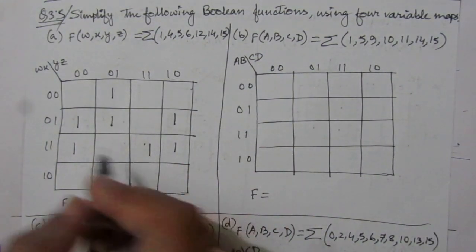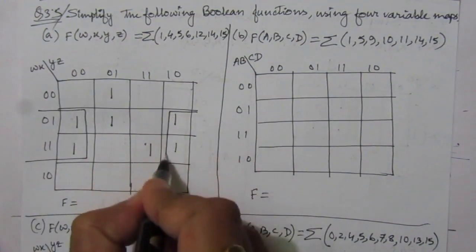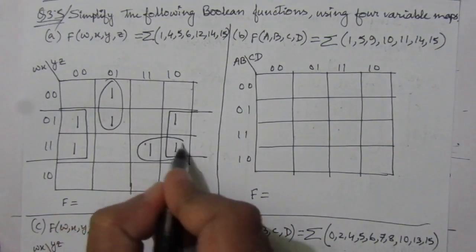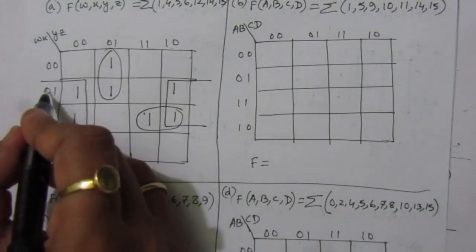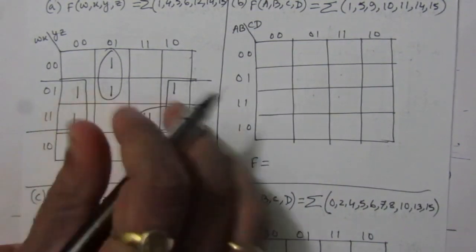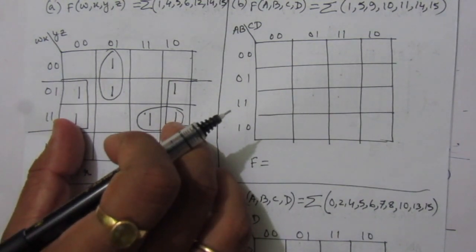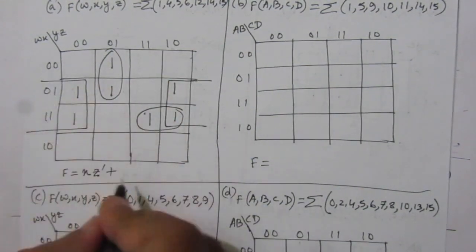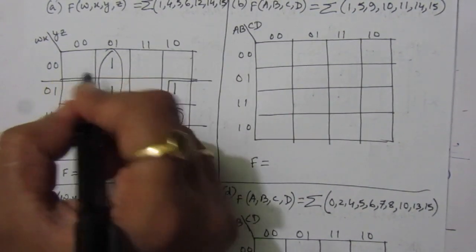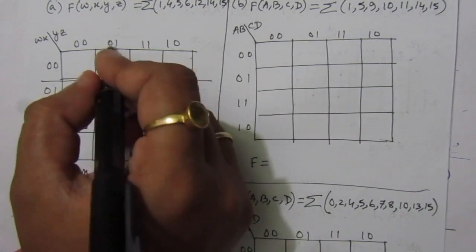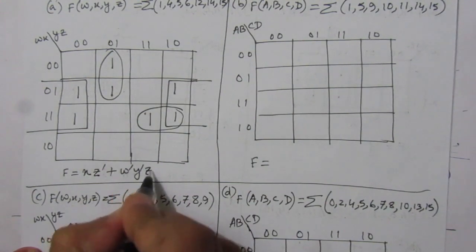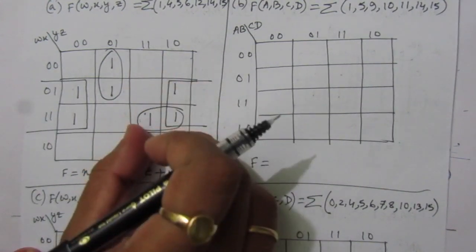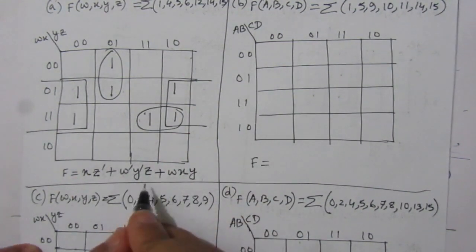From the map, we combine groups. The first combination covers cells where w is 0 and 1, so w is discarded, and for those two columns z is 0, giving xz̄. For the second term, w is 0,0 giving w̄, x is 0,1 so it cancels, and we get w̄ȳz. For the third term, w and x are both 1,1 giving wx, and we get y — so the term is wxy. The simplified Boolean expression is xz̄ + w̄ȳz + wxy.